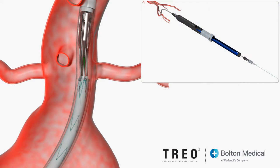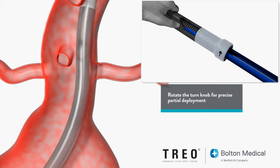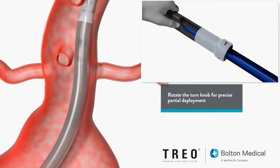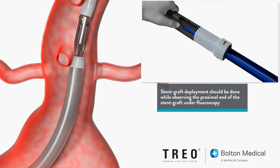To deploy the main bifurcated stent graft, hold the stationary grip and rotate the turn knob in the direction of the arrow to start initial deployment of the stent graft. Observe the proximal end of the stent graft as it starts to deploy.